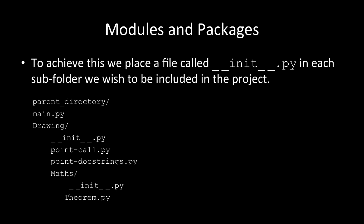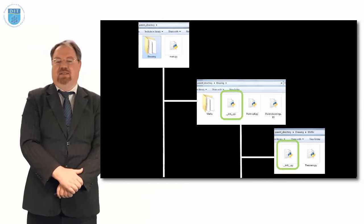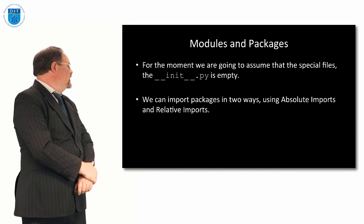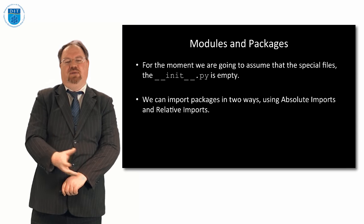So we have a parent directory with a main Python program, a drawing folder containing __init__.py, point_call.py, point_docstrings.py, and a maths subfolder. The maths subfolder has __init__.py and theorem.py. For the moment, let's leave the __init__ files empty, and look at how we bring in packages. We've looked at absolute imports, and now we'll look at relative imports.